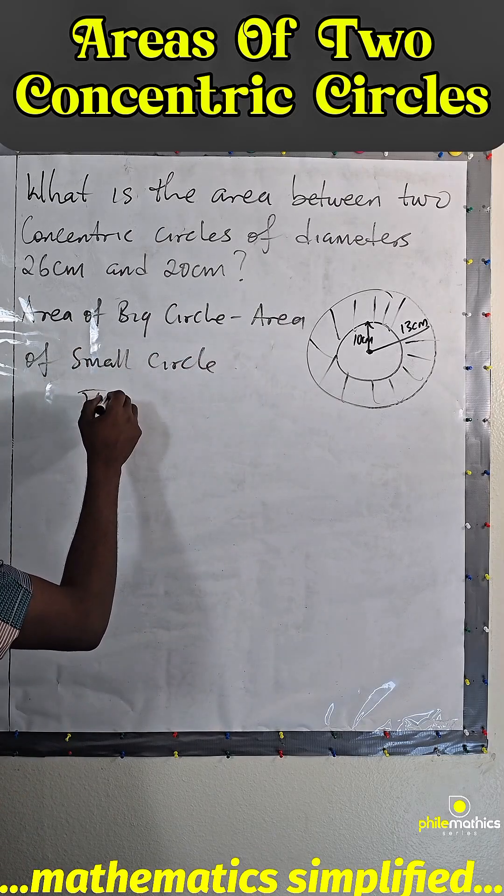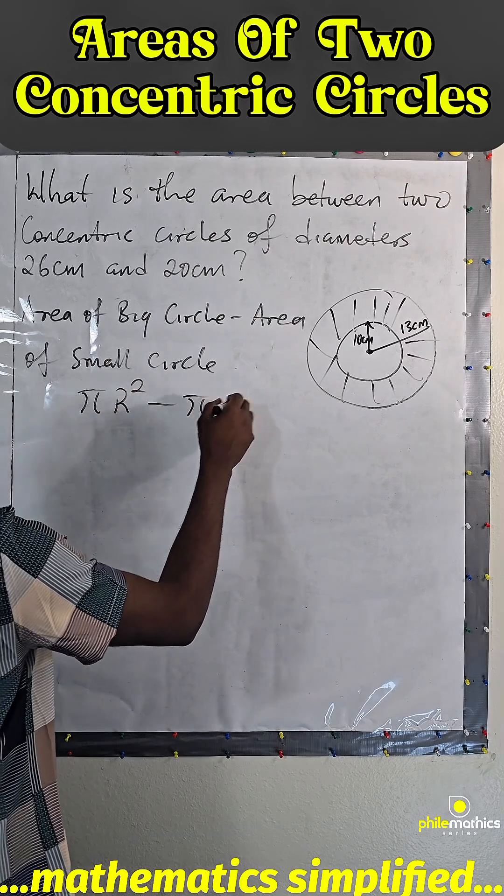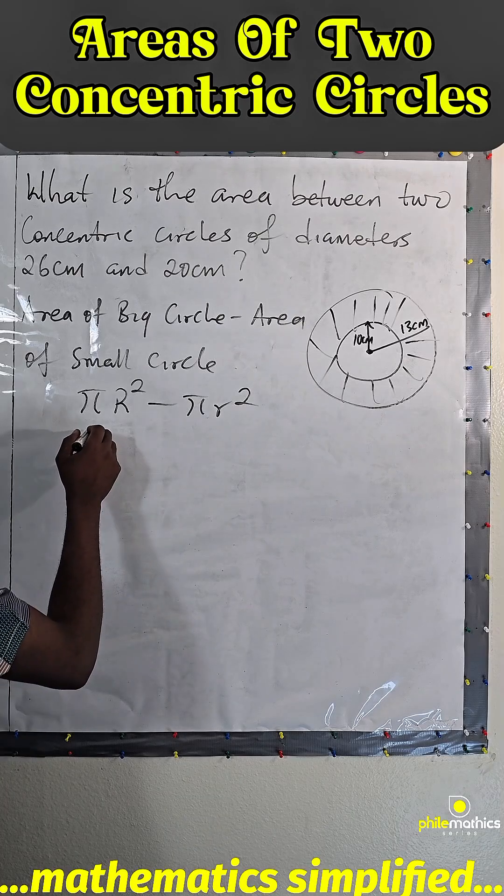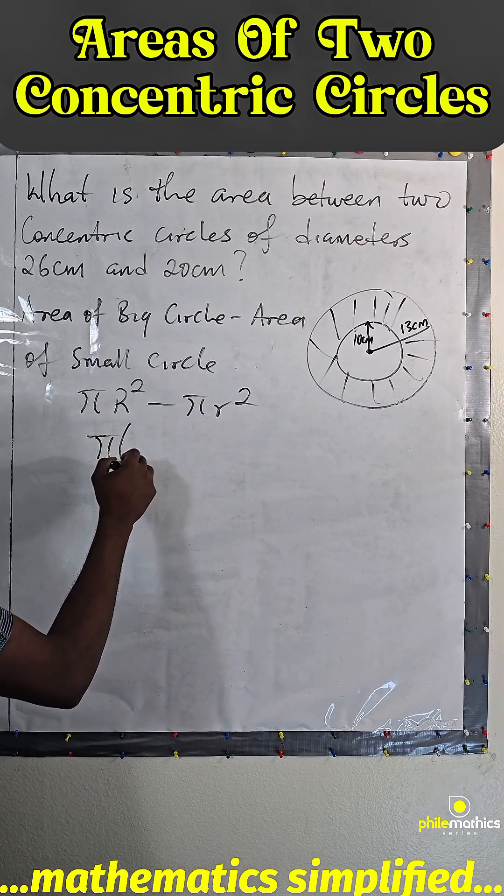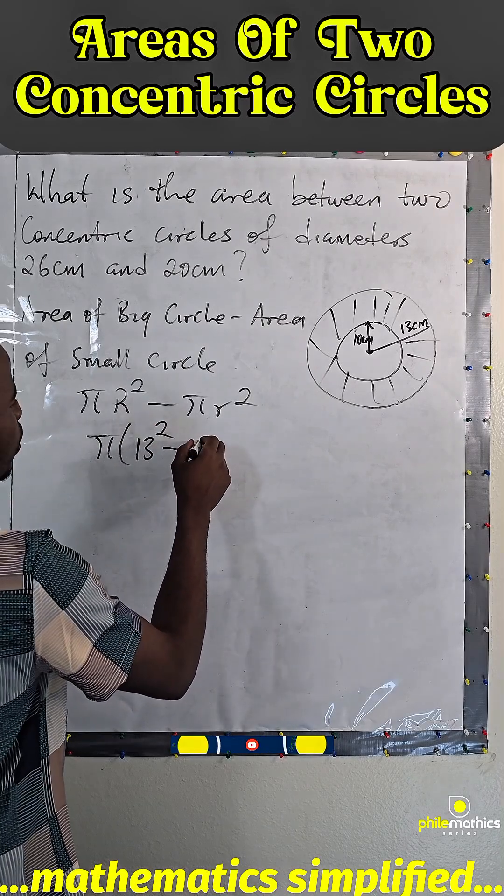Area of big circle, let's write as πr². Area of small circle as πr². We can leave our answer in π. I factorize π out. I'll have π times (big is 13² minus smaller one is 10²).